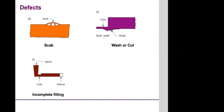Incomplete filling of the mould — a misrun — can occur due to inadequate metal supply, too-low mould temperature (causing the material to solidify before completely filling the mould), inadequately designed gates, or a length-to-thickness ratio of the casting that is too large. All of these reasons increase the solidification rate, meaning the material solidifies before completely filling the mould.